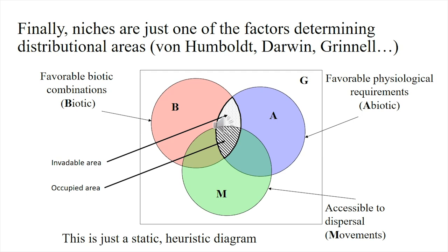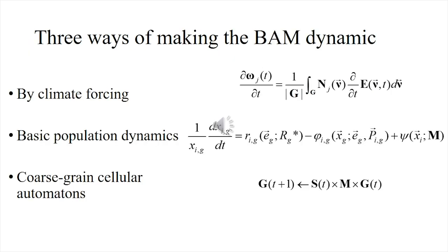Unless the three circles intersect, you don't get an occupied area of distribution. You may get a potential area of distribution in the intersection of A and B, but it's not going to be occupied unless M is also part of that. The idea of M — movements — presupposes the idea of where from. So if you are going to model M, you need to have a hypothesis about where populations started spreading from. The above diagram, called the BAM diagram, is essentially a heuristic tool — something that helps you to visualize factors — but it can be made more formal and there are ways of making it dynamic.